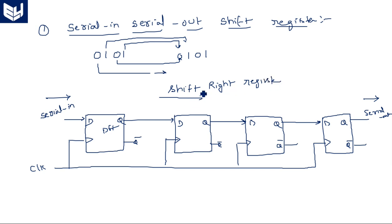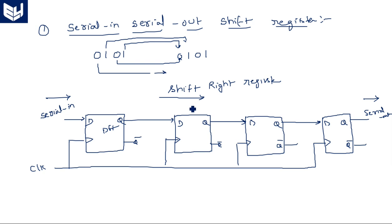For a right shift register the data moves right. To construct a left shift register, the same flip-flops are used but the input is given from the right-hand side and data is collected from the left-hand side. The D flip-flops are reversed: data is given to the last flip-flop, and the output of each flip-flop is connected as the input for the previous one. This way data moves from right to left, giving us a left shift register.